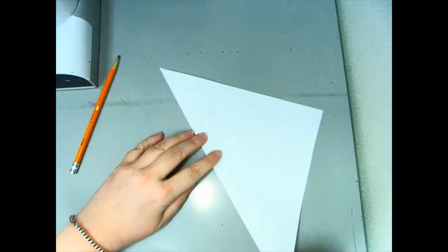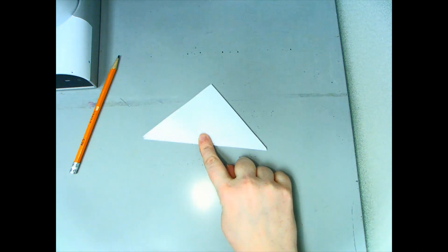You need to start by cutting your paper into a square. Then you fold it three times. That should leave you with a triangle this size. Then you're going to do the same with a second piece of paper.